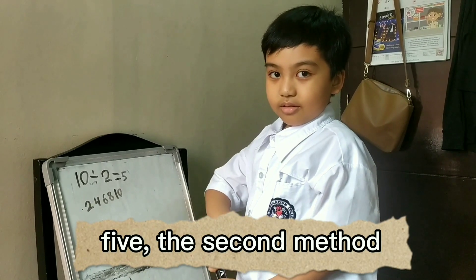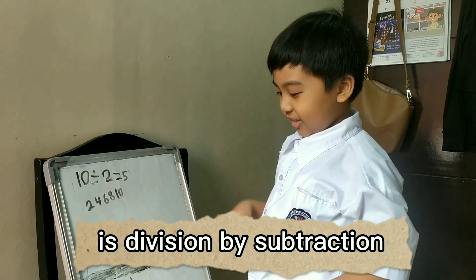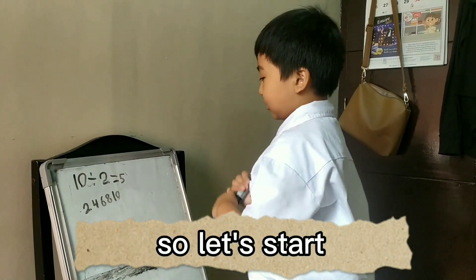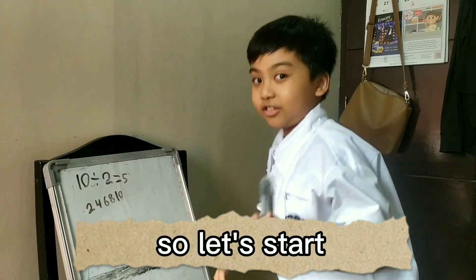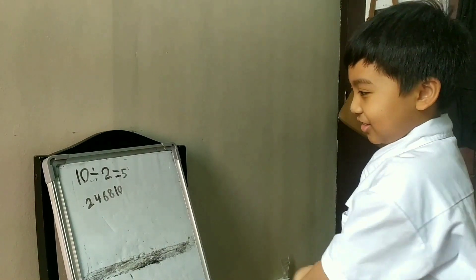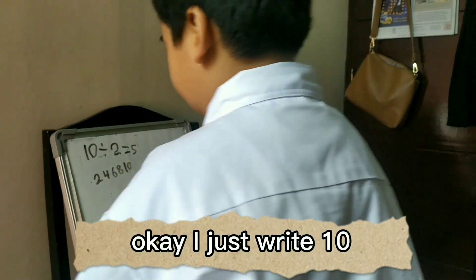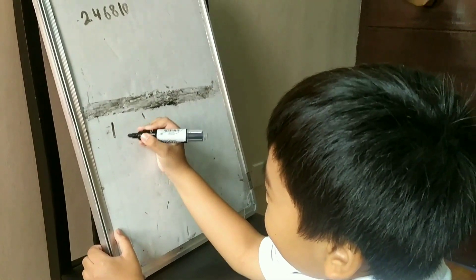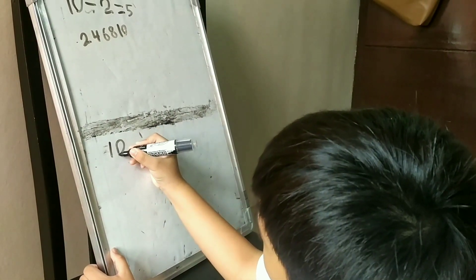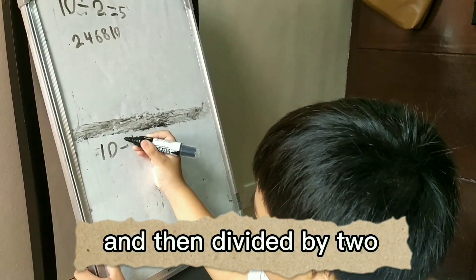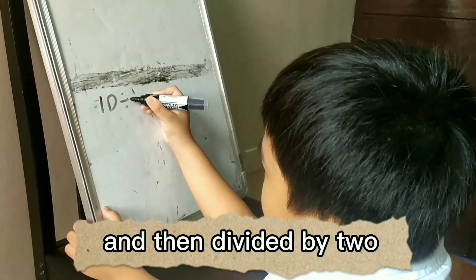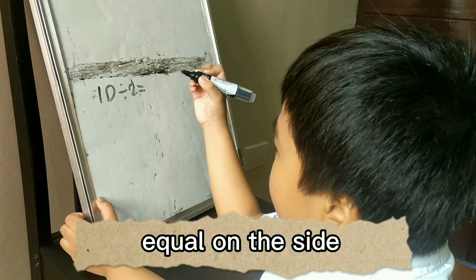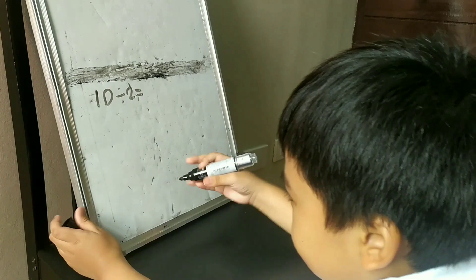Now, the second method is division by subtraction. So let's start. 10 divided by 2, equal sign here.